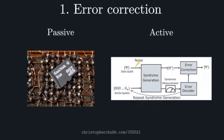Here's a sketch of what active error correction looks like: you have some qubits with quantum information being affected by noise. You take syndrome measurements to get information about the noise, which is fed into a classical algorithm — a decoder — that figures out what it can about the errors and applies a correction operator. The hope is that this overall process maintains or lengthens the lifetime of the quantum information. There are results showing that once noise is below some threshold, you can arbitrarily elongate the lifetime using this procedure.